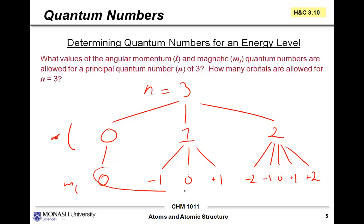If you count these up, in total you find that there are 9 altogether. 9, of course, is 3 squared. Notice that 3 is the number we started with. So to answer the question, how many orbitals are allowed for n equals 3, the total number of orbitals is going to be 3 squared.